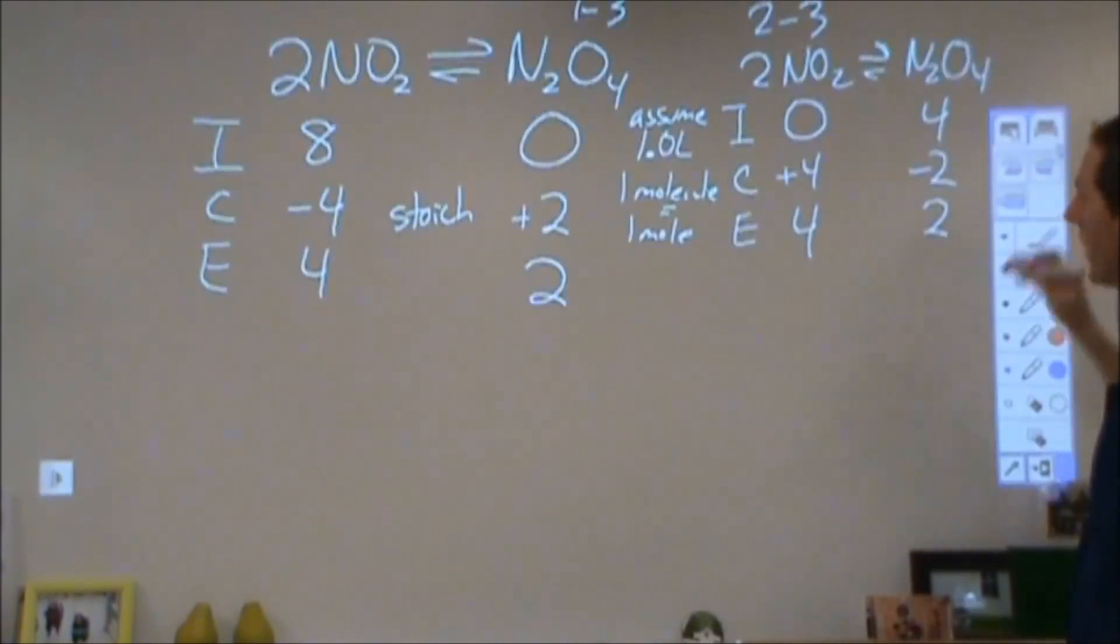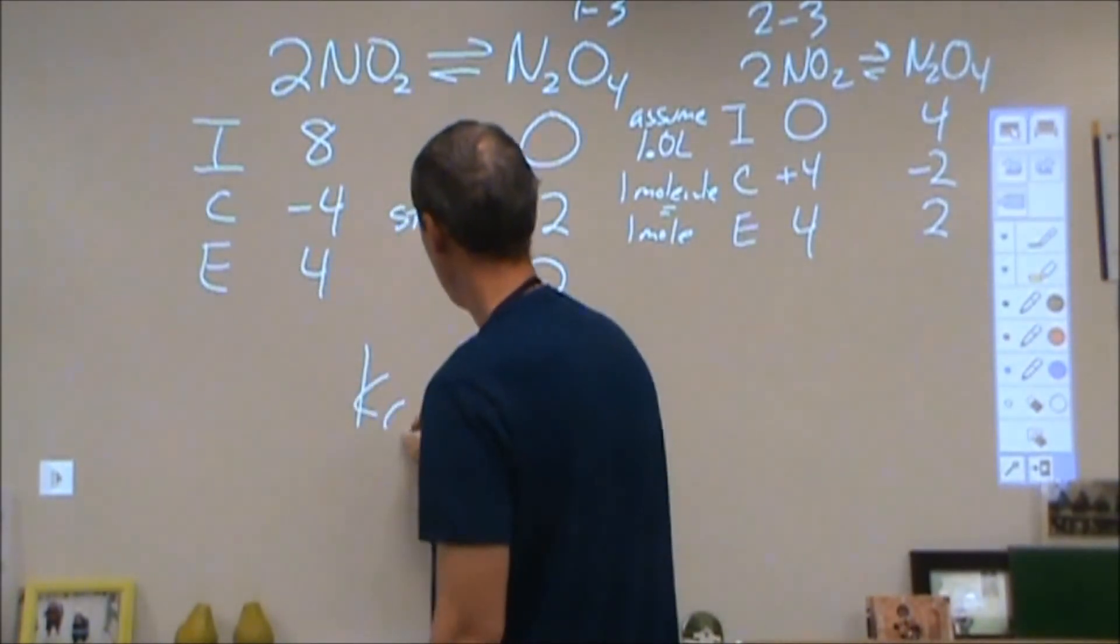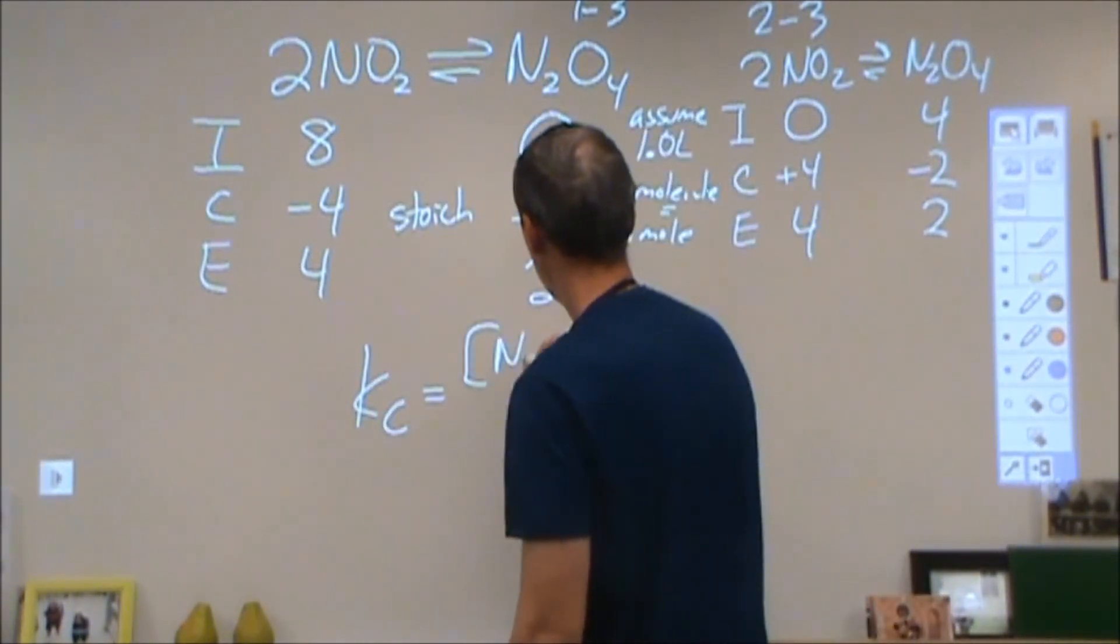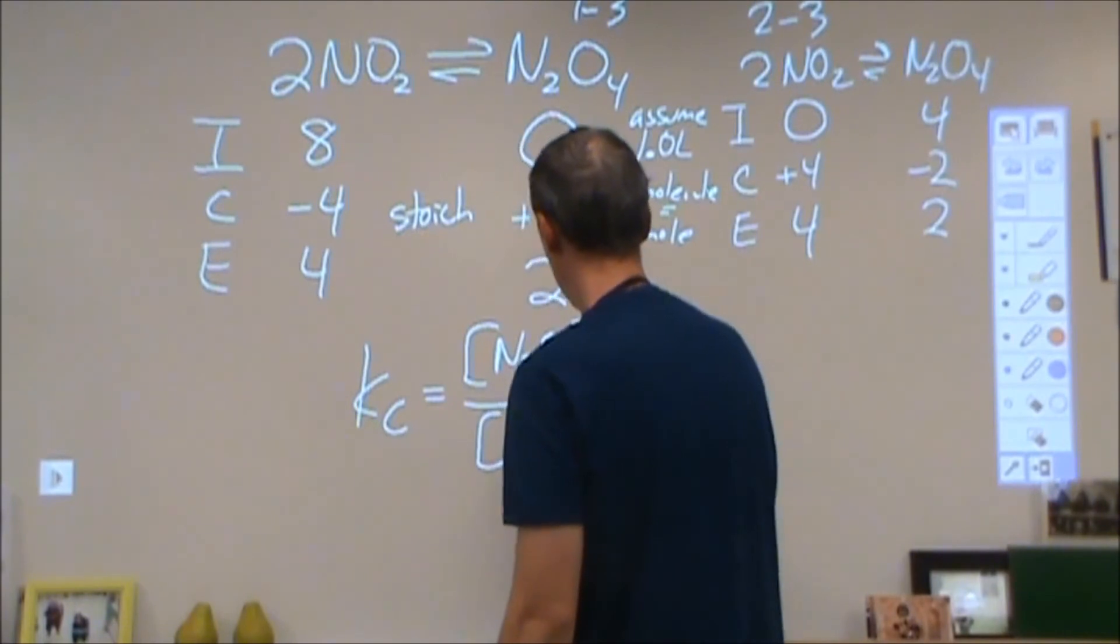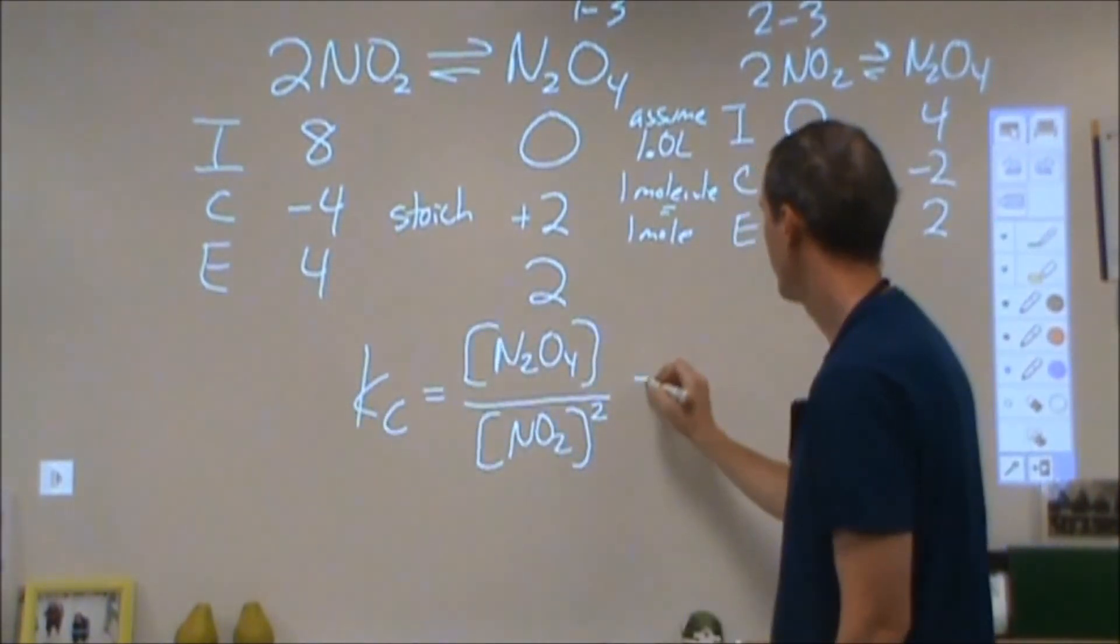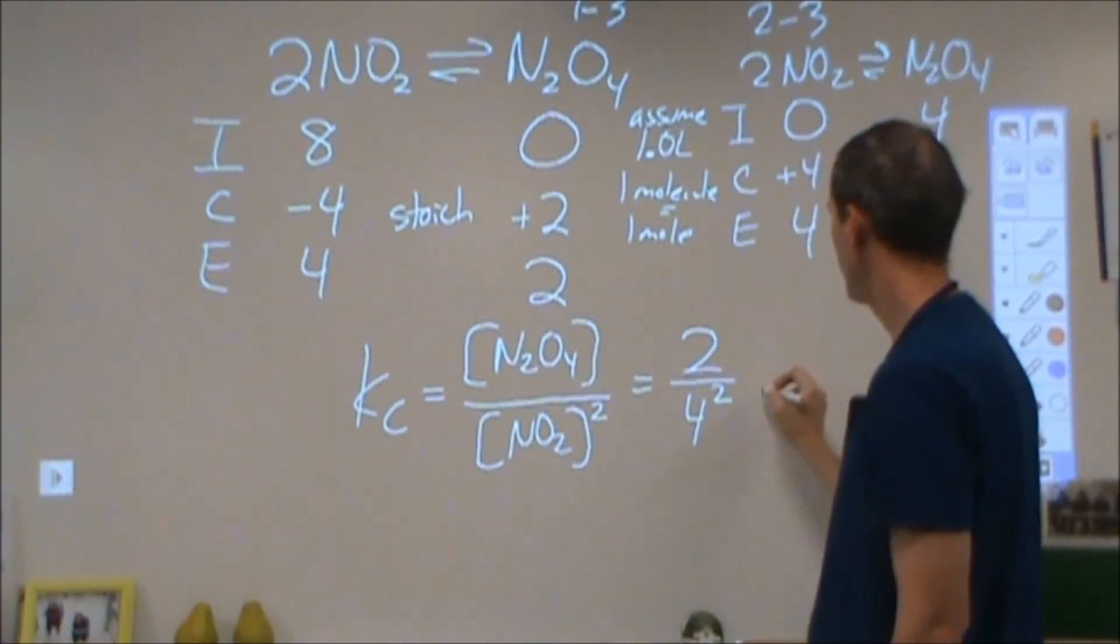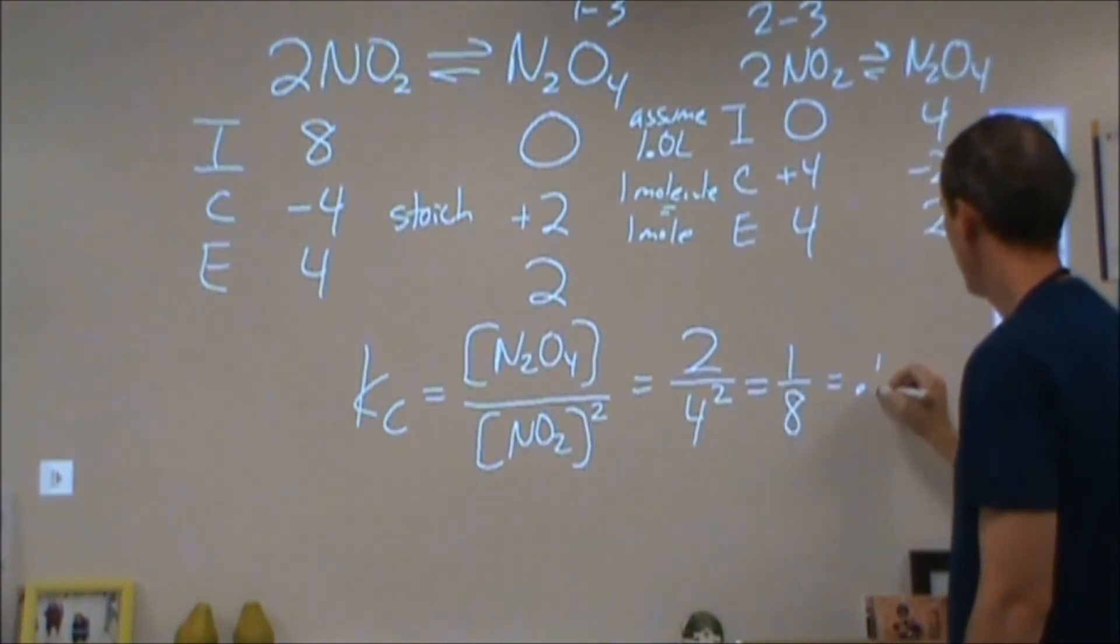The very last part is to calculate an equilibrium constant. Our equilibrium expression for this particular reaction is the concentration of N2O4 divided by the concentration of NO2 squared, products over reactants. Our concentrations are here. So we're going to plug in 2 over 4 squared. 2 over 16 is 1 over 8, which is 0.125.